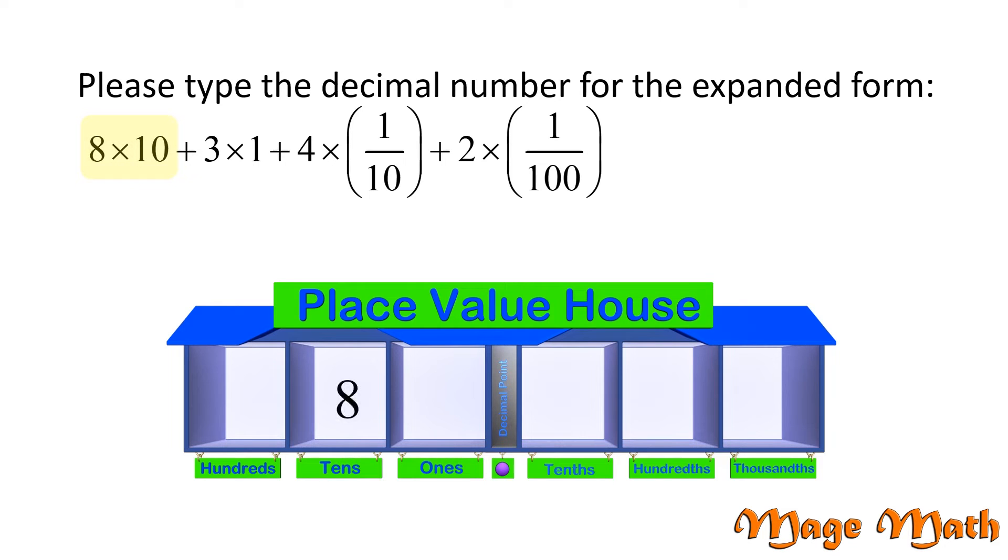Eight times ten means that we have eight tens. Three times one means that we have three ones. Four times one-tenth means that we have four tenths. And two times one-hundredth means that we have two hundredths. The decimal number is written like this: eighty-three and forty-two hundredths.